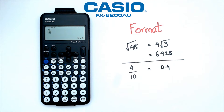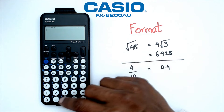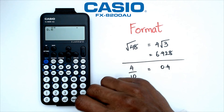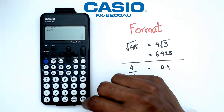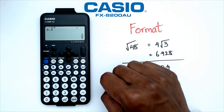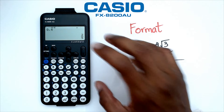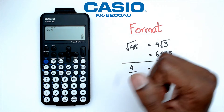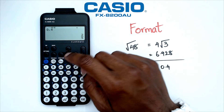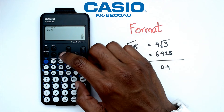Likewise, you can actually do it backwards as well. Let's try it out — if I go 0.4, it's automatically going to give me as a fraction two over five. The main reason this is happening is because of the actual calculator settings.